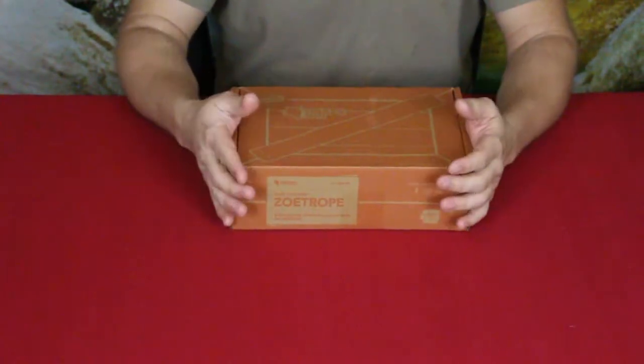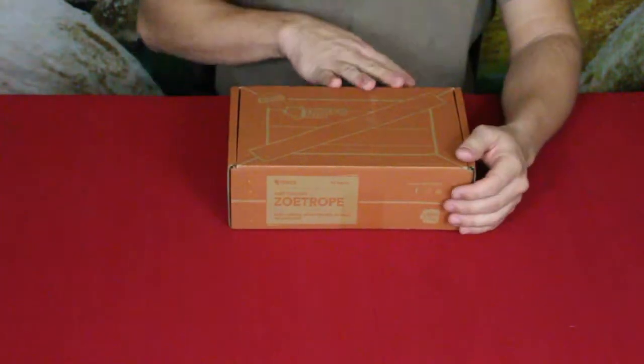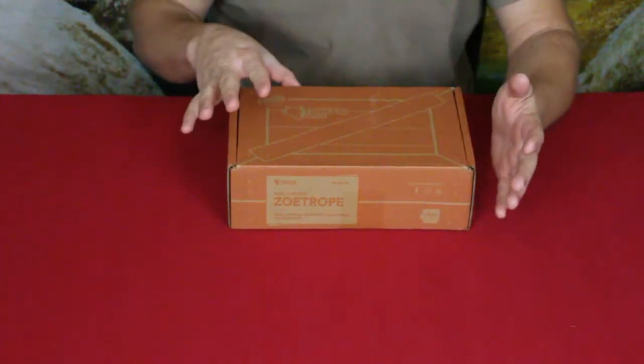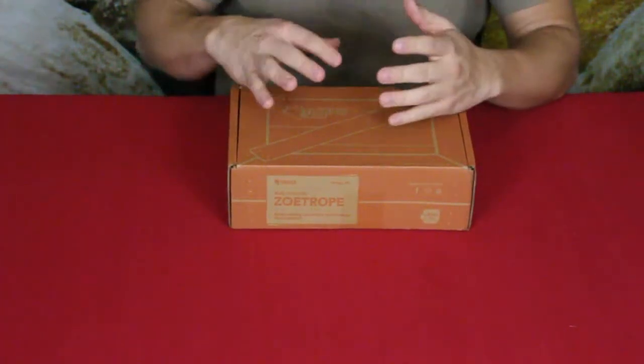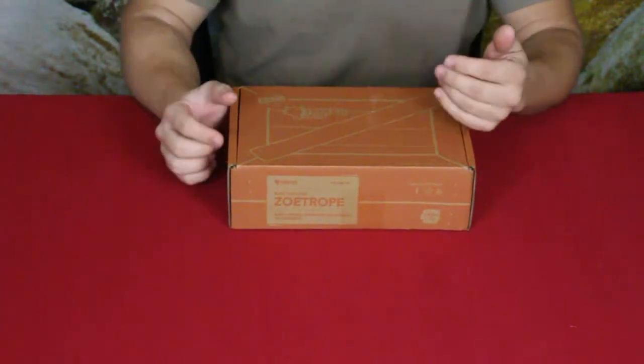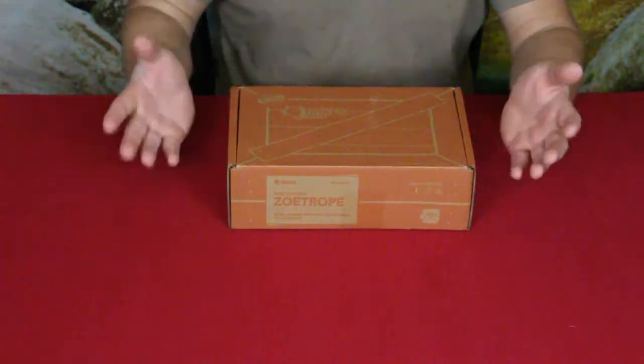Now Zoetrope, if you don't know what that is, has something to do with early animation. We've made similar things to this - it's just another variation of how they used to do moving pictures back in the early days of film. So let's go ahead, open this up, see what's inside, and get to building.